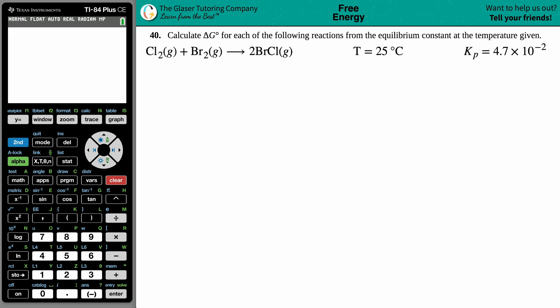Problem 40: Calculate ΔG° for each of the following reactions from the equilibrium constant at the temperature given. We have our equation here: Cl₂(g) + Br₂(g) → 2BrCl(g). They give us a temperature and an equilibrium constant of 4.7 × 10⁻².